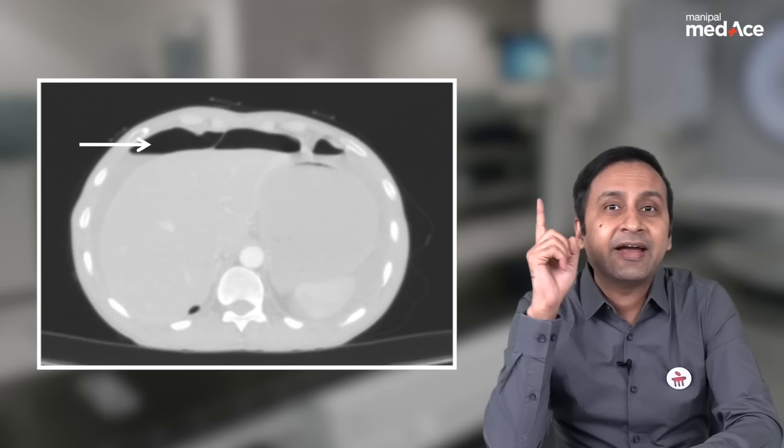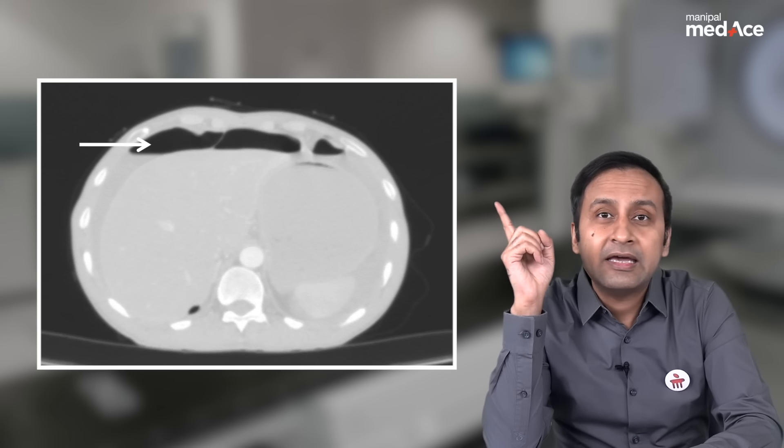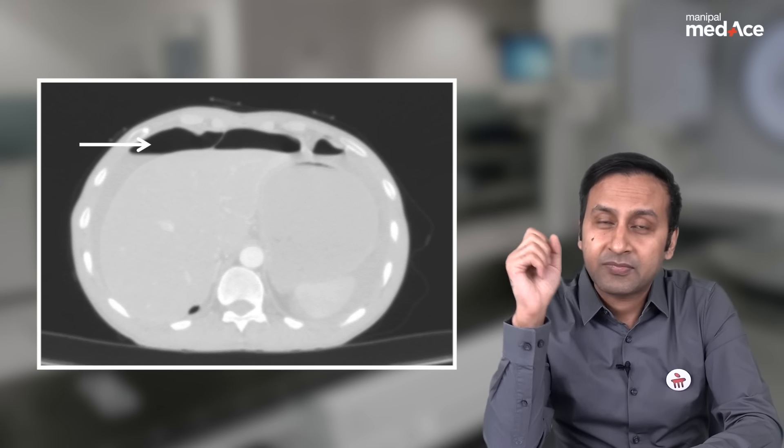Talking about the overall investigation of choice — whenever there is going to be air in question, the investigation of choice has to be a CT. Similarly, in cases of perforation peritonitis, the investigation of choice is a CT. You are going to find air or pneumoperitoneum in this form.